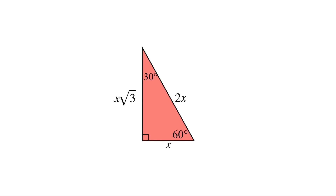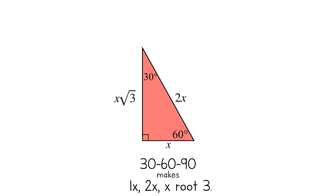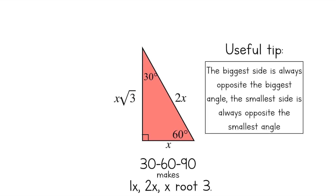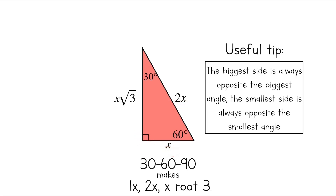This pattern is a little more complex than the 45-45-90 pattern. If you have trouble remembering the side lengths, just remember: 30-60-90 makes 1x, 2x, x root 3. And if you have trouble remembering where these side lengths go, here's a useful tip: the biggest side is always opposite the biggest angle, and the smallest side is always opposite the smallest angle. So 2x is across from the 90 degree angle, x is across from the 30 degree angle, and x root 3 is across from the 60 degree angle.